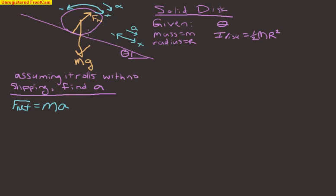We have one more force: friction. If there were no friction, this wouldn't roll at all — it would just slide straight down the incline. Friction is what causes it to roll, so it acts to oppose the sliding motion, pointing up the incline. With the axis of rotation at the center, neither the normal force nor gravity produces any torque because their lines of action pass directly through the axis. So friction must point up the incline to produce a clockwise angular acceleration.